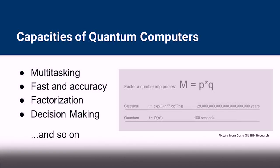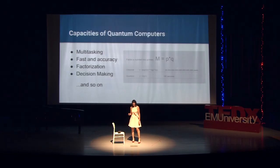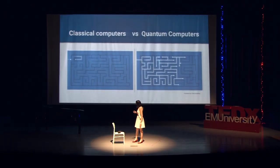They are also really good at factorization. For example, there are two numbers, P and Q, and we don't know what they are. If you want to find P or Q using classical computers, it will take an enormous amount of time. But with quantum computers, it is only 100 seconds.